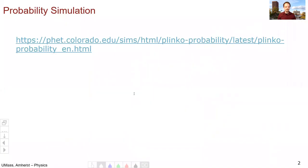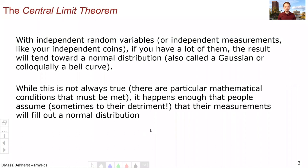So this is an example of what is known as the central limit theorem. The central limit theorem says that with independent random variables or independent measurements like the independent coins that you have in your lab or the independent pegs that the balls hit on your way down, if you have a lot of them, the result will tend towards a normal distribution, also called a Gaussian or colloquially because of its shape, a bell curve. While this is not always true, there are particular mathematical conditions that must be met, it happens often enough that people generally assume, sometimes to their detriment, that their measurements will fill out a normal distribution.